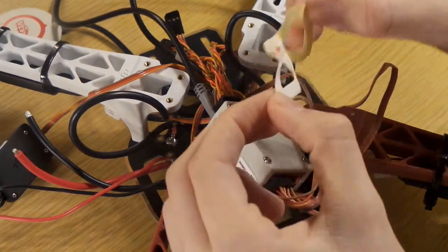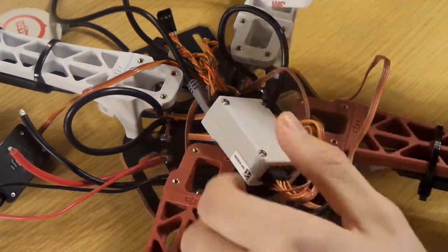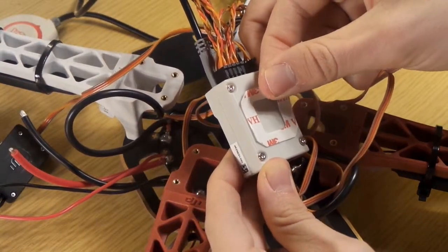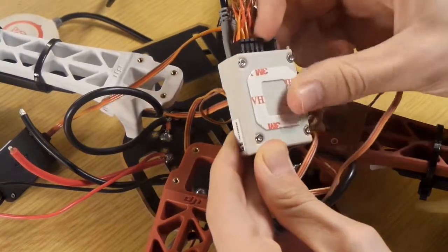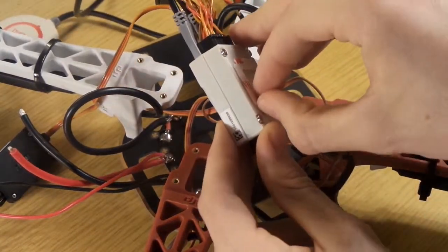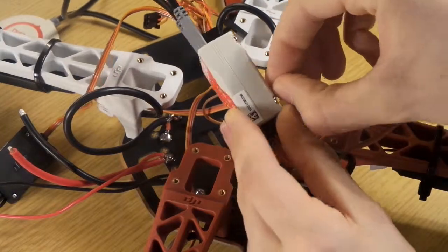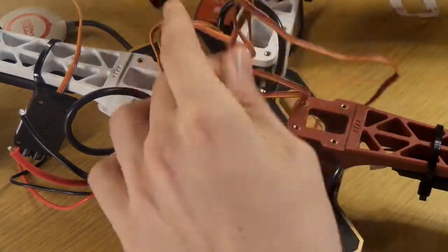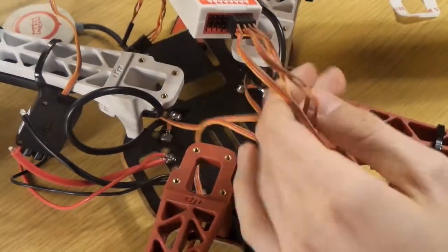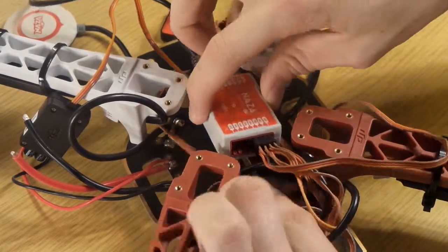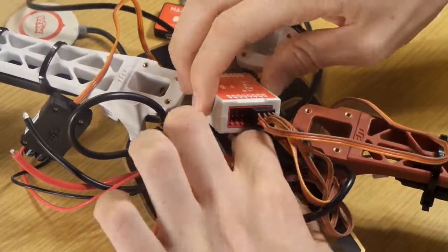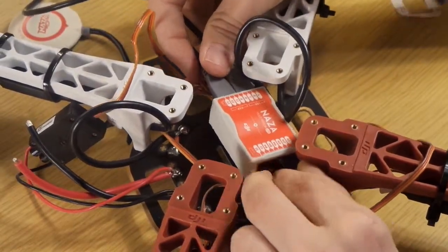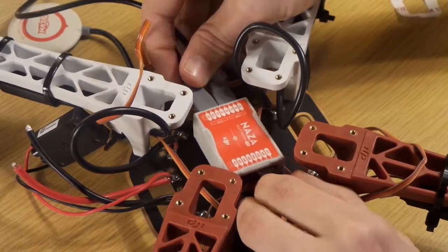We take the stickers which are in the kit and we are going to stick all the components onto the quad. The NASA M flight controller has to be right in the middle onto the CG and this arrow on the flight controller has to point forwards.